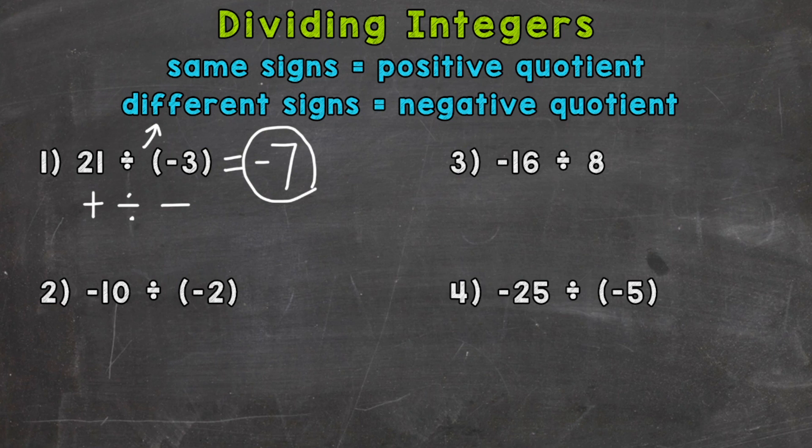On to number 2, where we have negative 10 divided by negative 2. Let's just think of this as 10 divided by 2, which gives us 5. Now, we have a negative divided by a negative. So number 2 would be same signs, right? Negative and negative. That's going to give us a positive quotient. So our final answer is a positive 5.